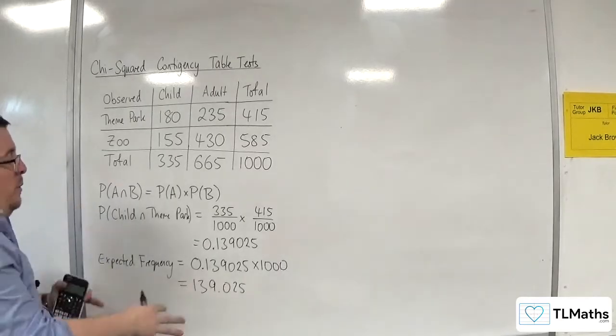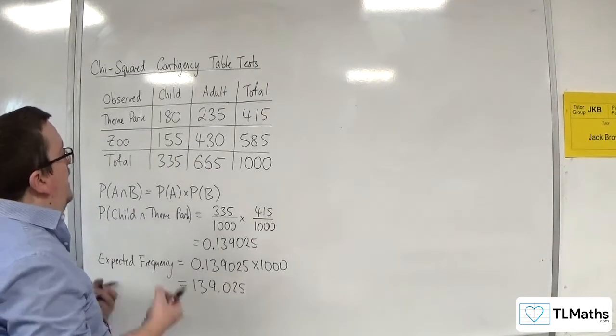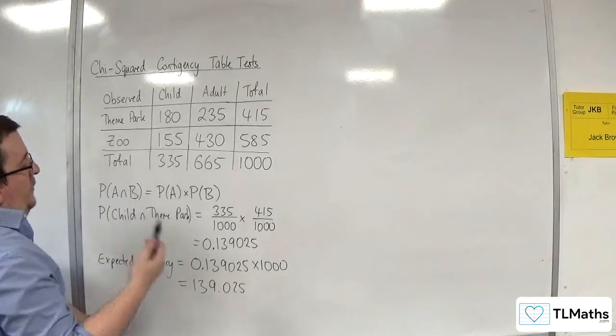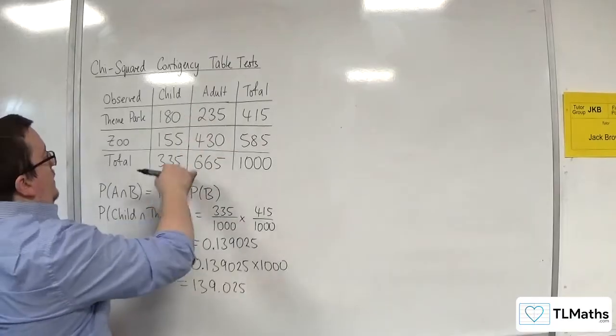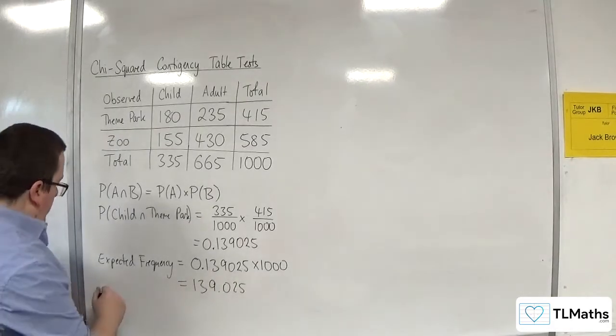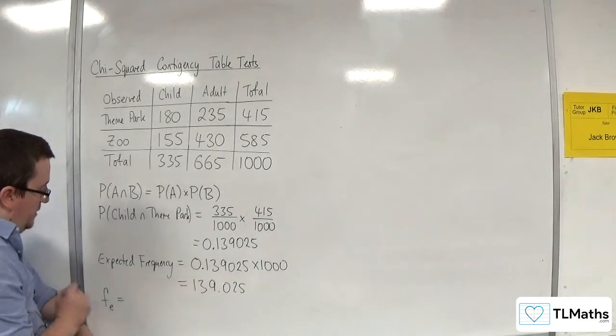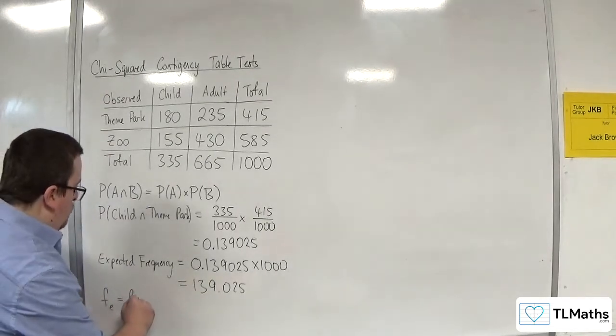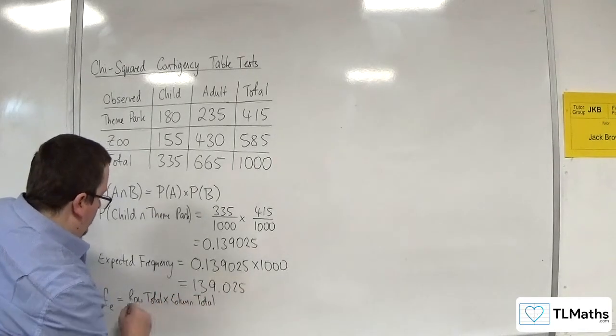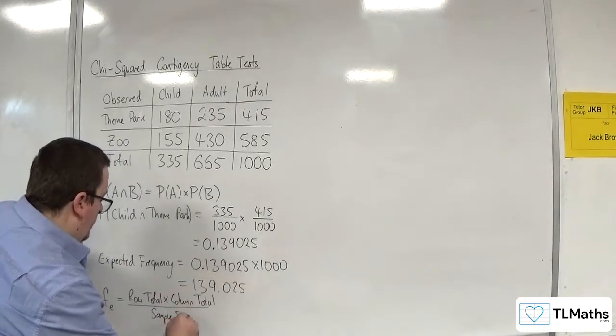Now that's what we need to do for each of our four values in the table. Now, the easy way to do that, to find the expected value, is actually, because what we're doing is this times this times 1000, it's the same, because the 1000 will cancel here, as doing the column total times by the row total divided by 1000. So the expected frequency can be calculated as the row total times by the column total divided by the sample size, which in our case was 1000.